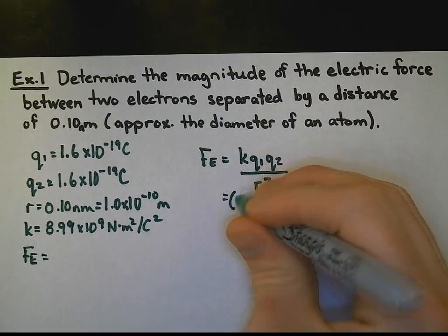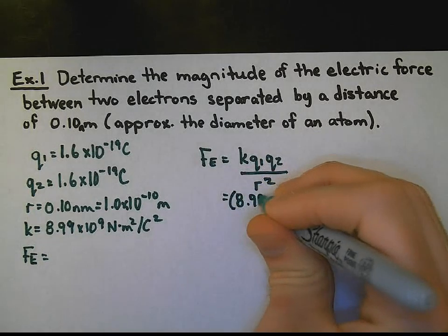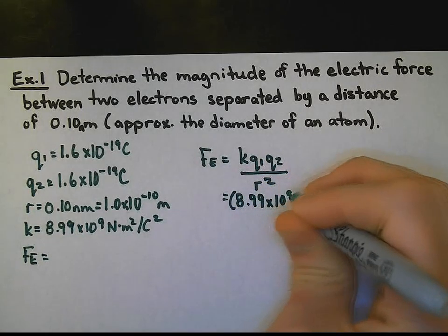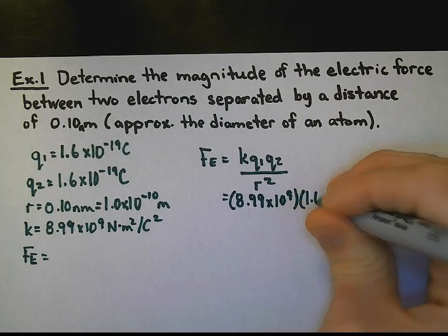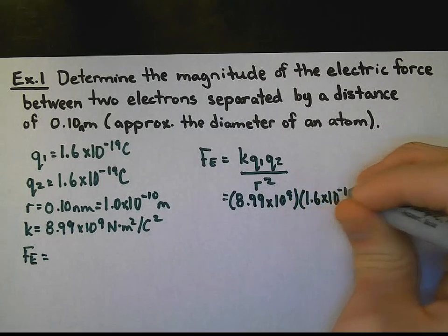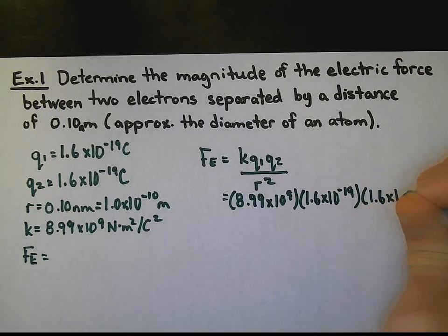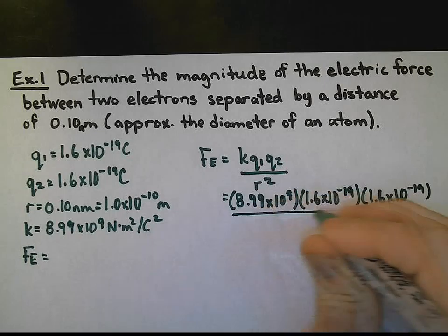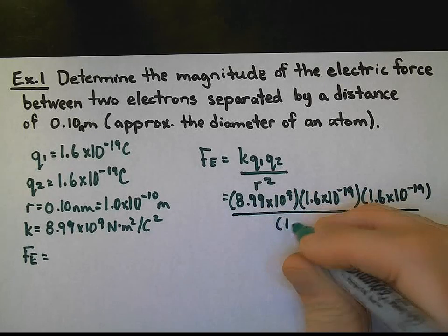So 8.99 times 10 to the 9 multiplied by 1.6 times 10 to the negative 19, 1.6 times 10 to the negative 19 again, and that will all be divided by 1.0 times 10 to the negative 10 squared.